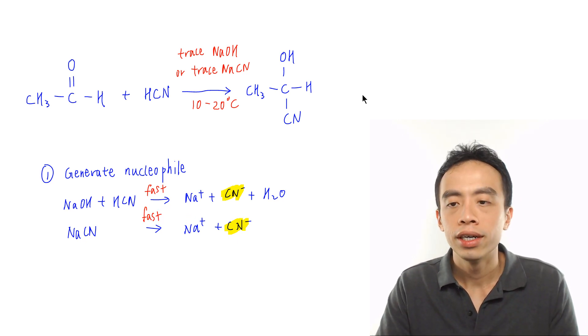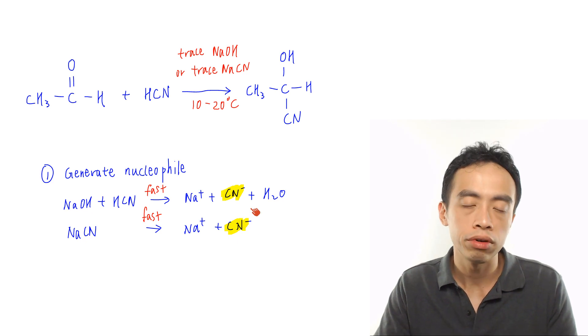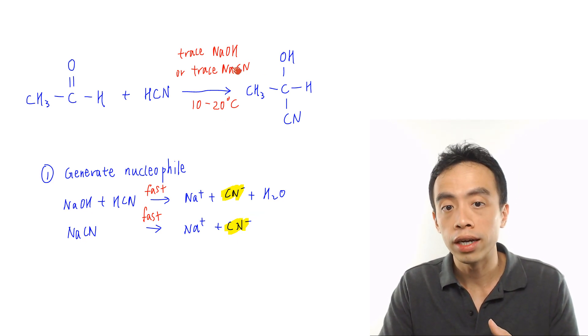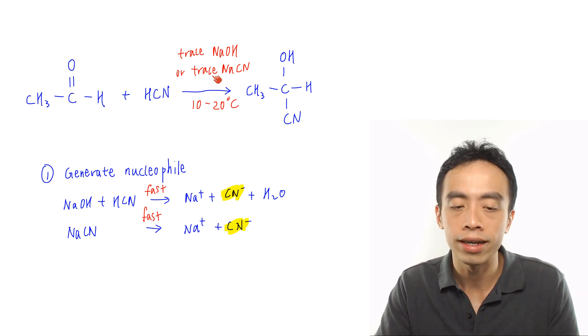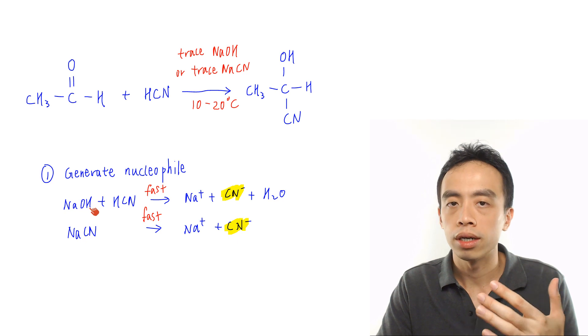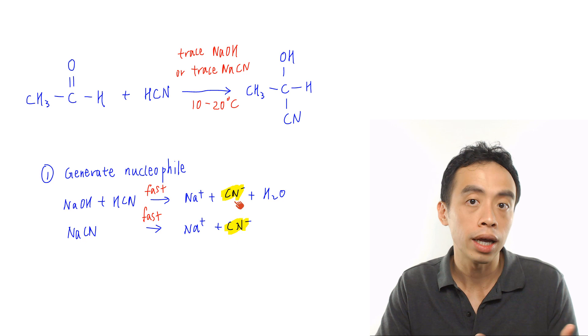One thing to note is nitrile is the catalyst in this case, so later it would be regenerated. Therefore in terms of the amount of NaCN, we don't need to add a lot. Just add a trace amount because it is the catalyst.